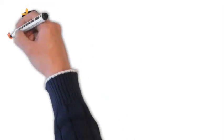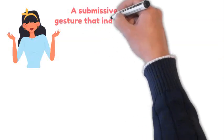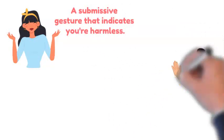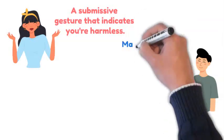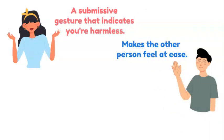Other messages are conveyed through body language such as shrugging, which is a submissive gesture that indicates you're harmless, talking with your palms raised, which makes the other person feel at ease, leaning in their direction,